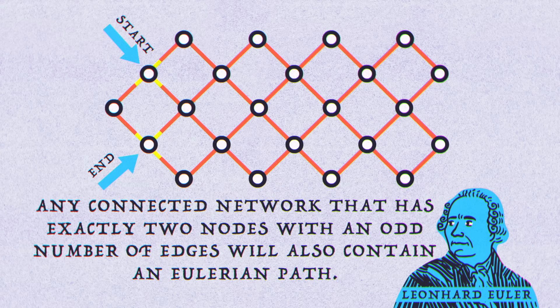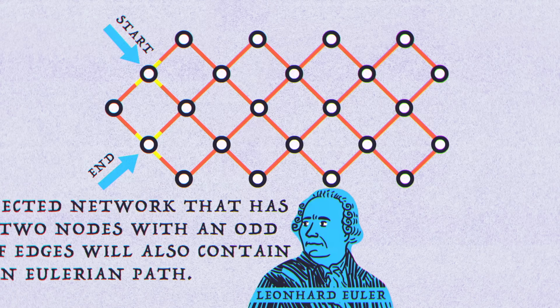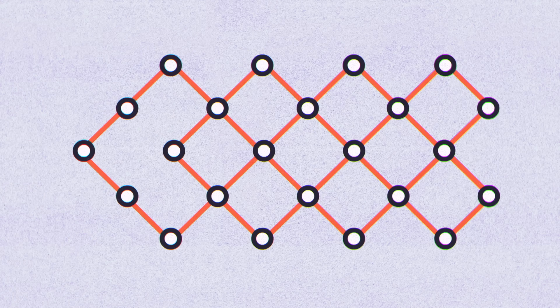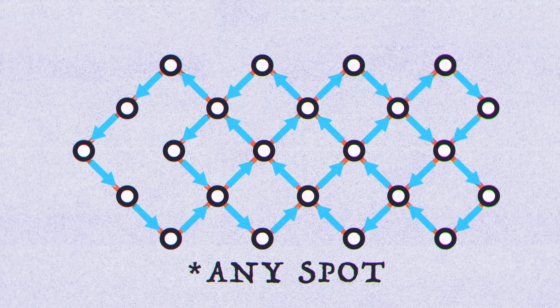Interestingly enough, any connected network that has exactly two nodes with an odd number of edges will also contain an Eulerian path. The same is true if there are no nodes with an odd number of edges. In that case, the path starts and ends in the same spot.